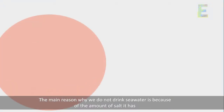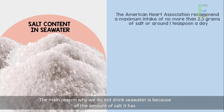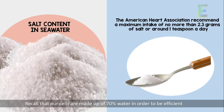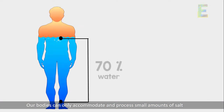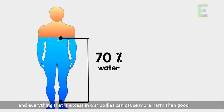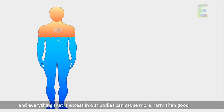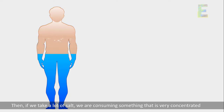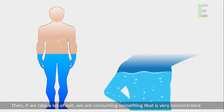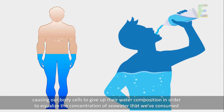The main reason why we do not drink sea water is because of the amount of salt it has. Recall that our cells are made up of 70 percent water. In order to be efficient, our bodies can only accommodate and process a small amount of salt, and everything that is excess in our bodies can cause more harm than good. Our body and body cells are not exempt from nature's drive for equilibrium.